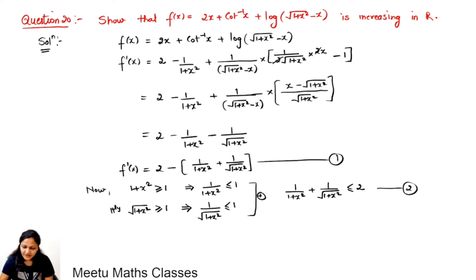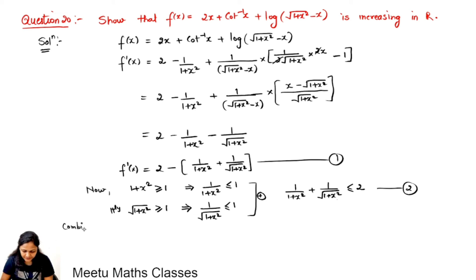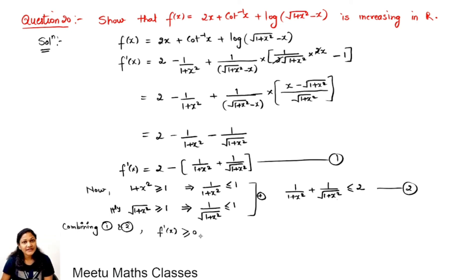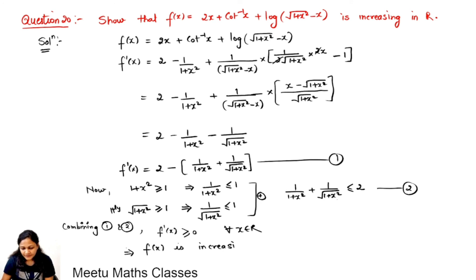So this is the second statement. Now combining statements 1 and 2: the derivative function is 2 minus this quantity, and this quantity is less than or equal to 2. So combining 1 and 2, we get that f'(x) = 2 minus a quantity which is less than or equal to 2, which must be greater than or equal to 0. Therefore, f'(x) ≥ 0 for all x belonging to ℝ. This implies that f(x) is increasing in the set of real numbers.